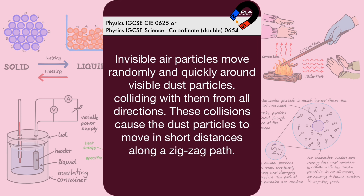Brownian motion. Invisible air particles move randomly and quickly around visible dust particles, colliding with them from all directions. These collisions cause the dust particles to move in short distances along a zigzag path.